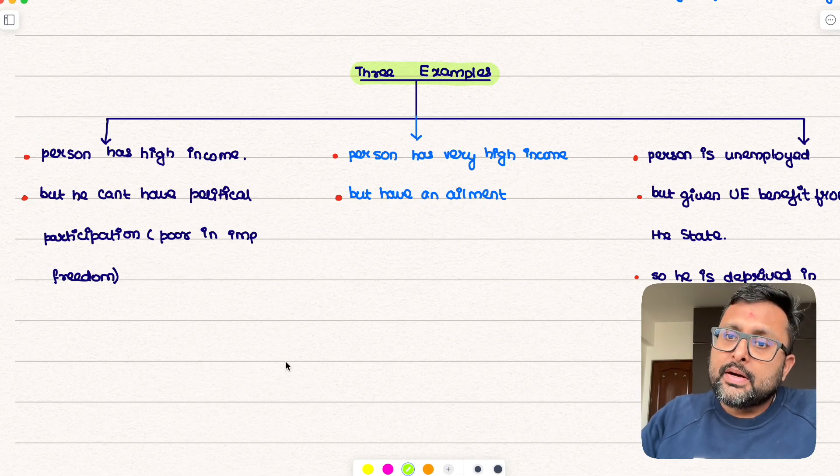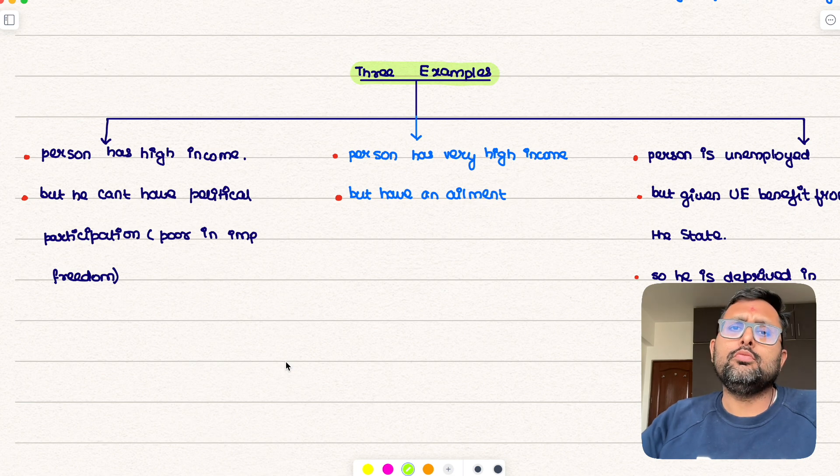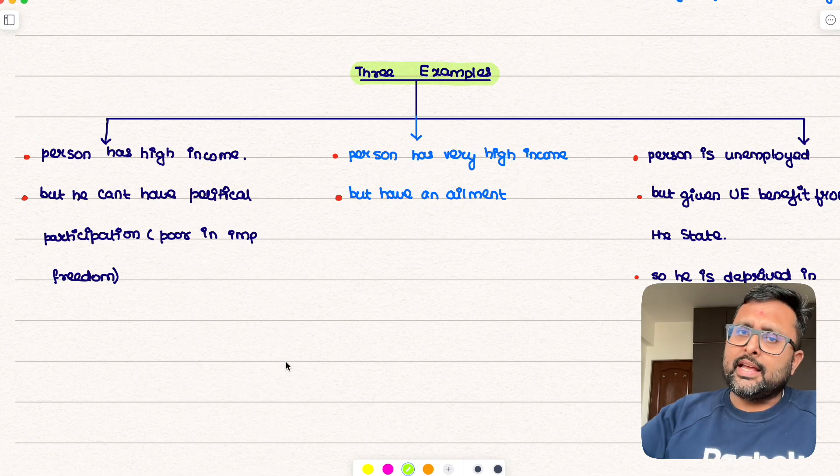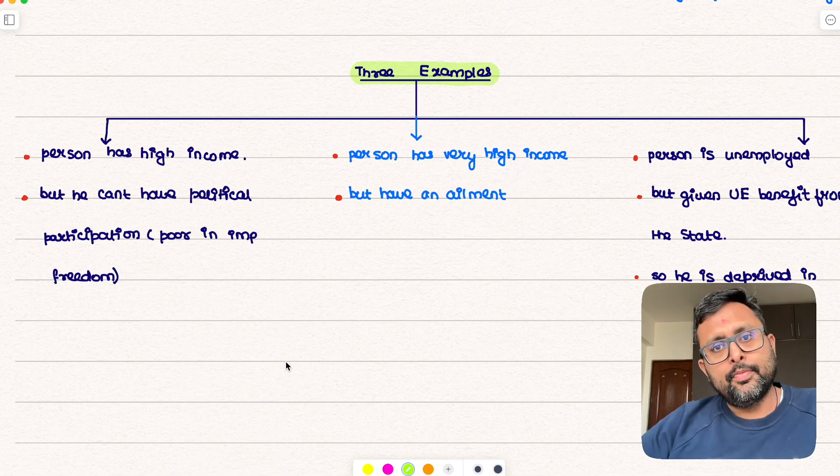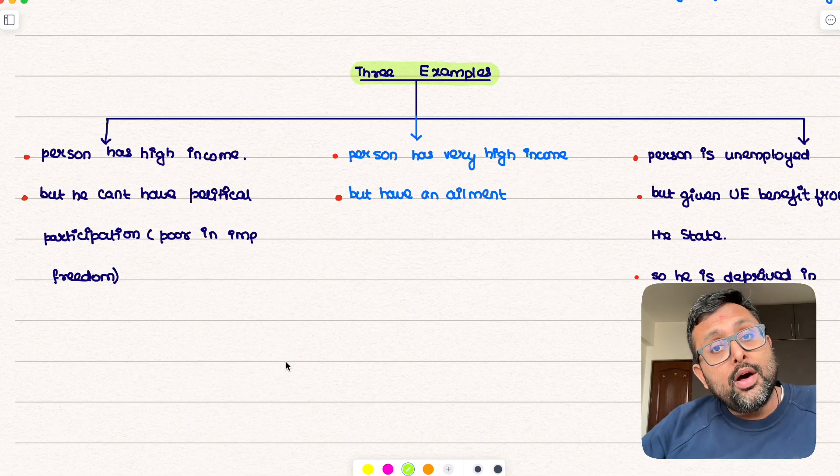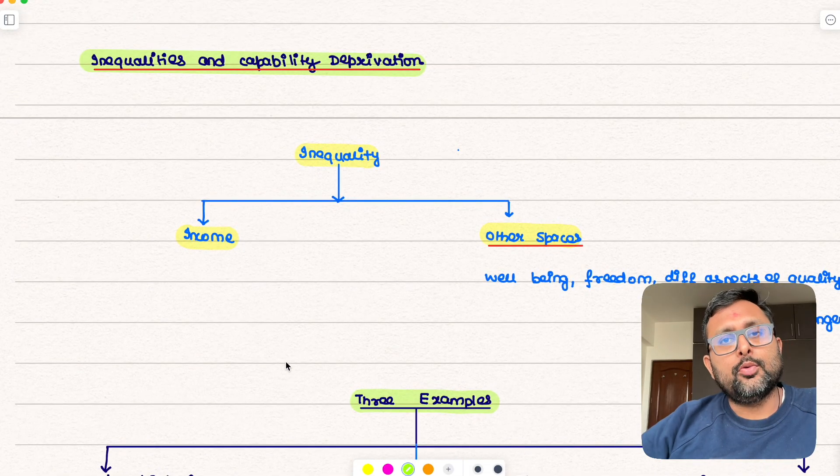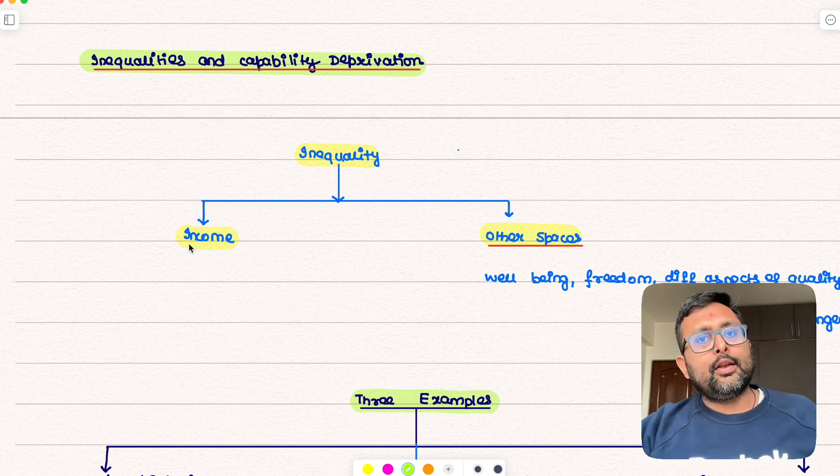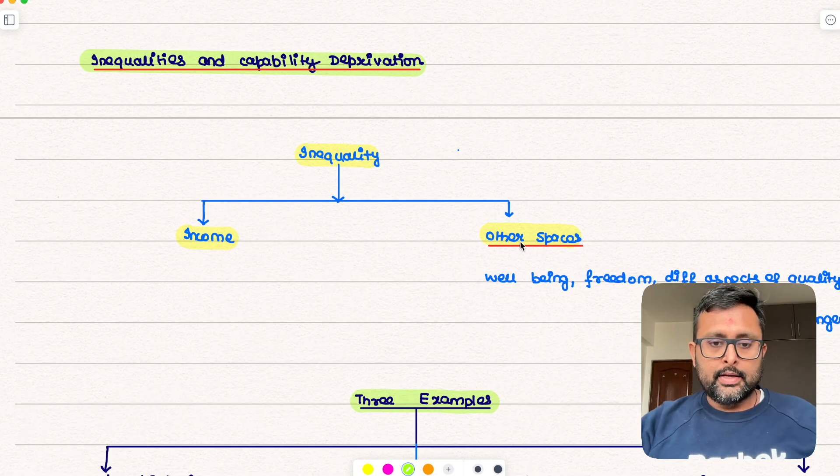So the third example: person is unemployed. And government says don't worry, we'll give you unemployment benefit. So as far as unemployment benefit is given to him, as far as income is concerned, he is not income deprived, right? But at the same time he doesn't have a freedom of having fulfilling occupation. So he is poor in that space. So that is the meaning of space here. Space means other kinds of inequality. There is one kind of inequality in one sense, you're looking at income inequality here. These are other senses, other spaces in which you can look at inequality.